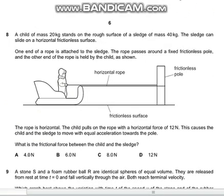Question 8 asks us to find the frictional force between the child and the sledge. Let's first write the equation for the child. Applying F equals MA, 12 minus frictional force equals MA.